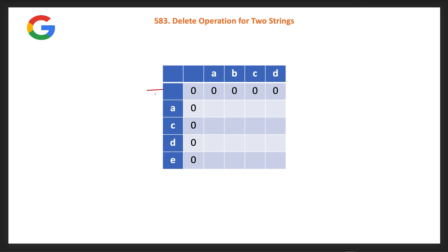For the bottom-up LCS approach: when word two is empty or word one is empty, fill with zeros — no common subsequence possible. When we extend: if 'a' matches 'a', take diagonal plus one, giving one. If 'a' doesn't match 'v', take the maximum of the cross-diagonal entries, keeping one. Continuing row by row — when characters match take diagonal plus one; when they don't match take the maximum of adjacent values — we build up to three at the last cell in our example.